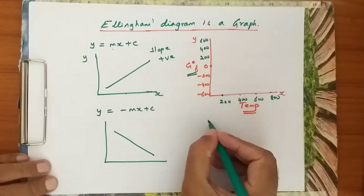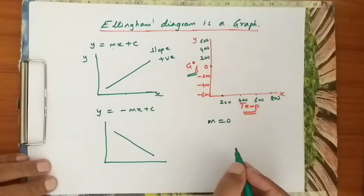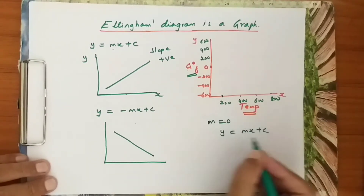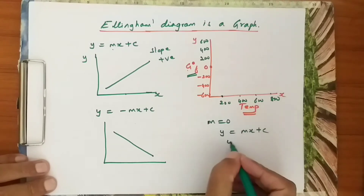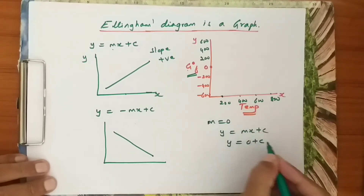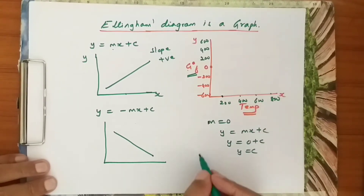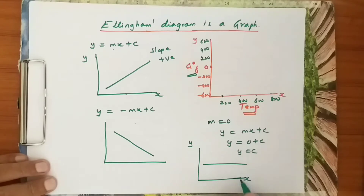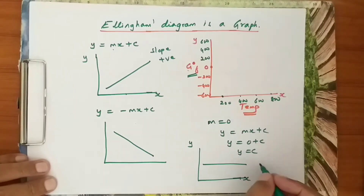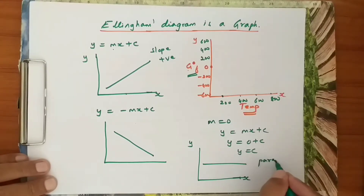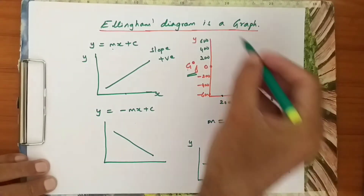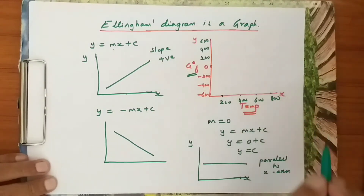The third case is where m = 0. In y = mx + c, when m = 0, y = 0 + c, so y = c. In this case the graph will be parallel to the x-axis, and in the Ellingham diagram this line will be parallel to the temperature axis.